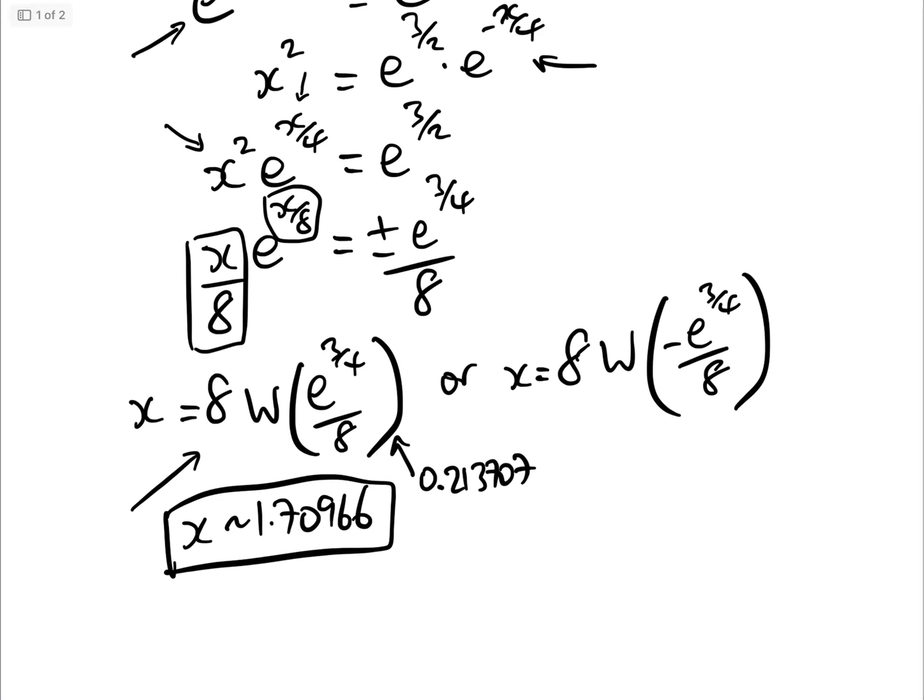And here we get two solutions. And if you don't know why we get two solutions, please watch the video, simple guide to the Lambert W function, because this is between 0 and minus 1 over e.